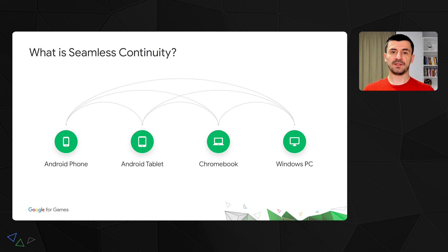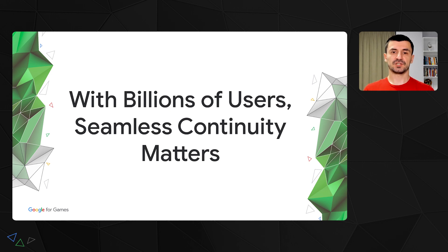We should already be thinking about the many users that are already switching between multiple devices like phones, tablets, or Chromebooks over the course of the same day. And we need to remember that everyone changes to a new phone from time to time. With so many opportunities for users to change devices, and with billions of users on Google Play, there will be many millions who will need to restore their game state on another device every single day. Our internal research shows that if it doesn't work for a game, users are likely to churn completely out of gameplay. In the current world where users switch between devices, supporting multiple device types and seamless continuity between them is a must.